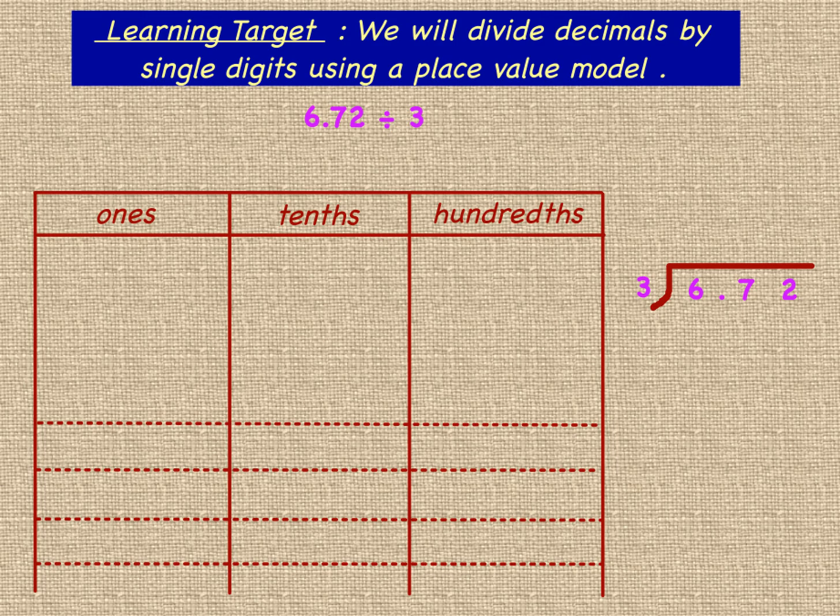We want to start by representing 6.72 on the place value chart. We'll start with our largest place value, which is the ones, and we have 6 ones represented with 6 place value disks. Then we'll move over to the tenths column. We have 7 tenths represented with 7 place value disks, and 2 hundredths represented with 2 place value disks. So we have 6 ones, 7 tenths, and 2 hundredths.